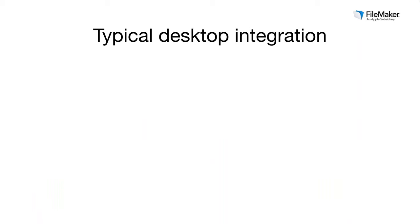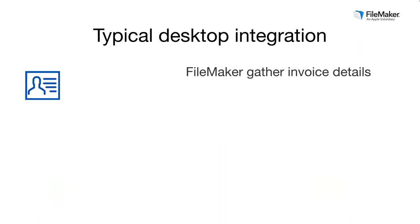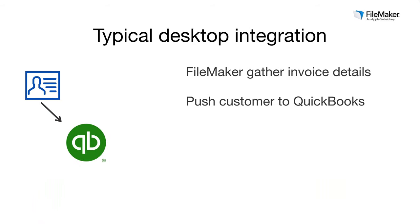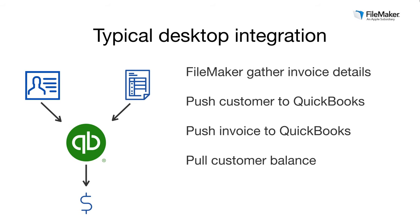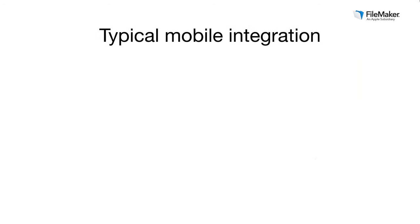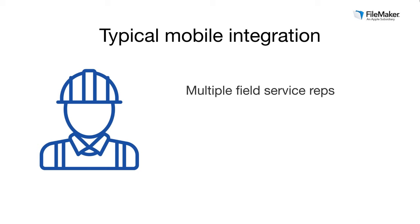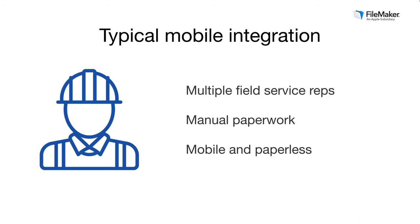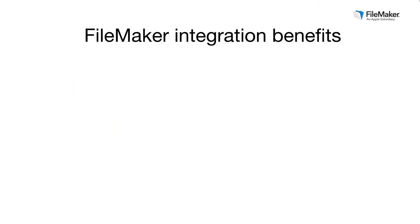Our most common QuickBooks integration requests are to automate the pushing and pulling of invoice and customer data. Using FileMaker apps, we create custom solutions that allow your entire team to gather customer invoice information from anywhere — desktop, web, or iOS device — then create buttons or scripts that send data to QuickBooks and pull updates back into FileMaker. We have multiple companies with field reps that relied heavily on paper forms; by creating custom FileMaker desktop and FileMaker Go apps, they eliminated all paper, went mobile, and sped up turnaround time from initial service requests to receiving final payment.